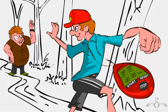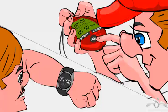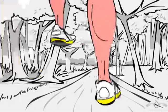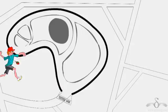Every day Raju goes with his dad to joggers park for a 6 km jog. Let us observe one day of his jog. Raju carries a stopwatch with him. His dad observes that he starts his run at 7 am. He starts his stopwatch and starts running. After completing a lap, he stops his stopwatch and observes that it took him 30 minutes to cover 3 km.